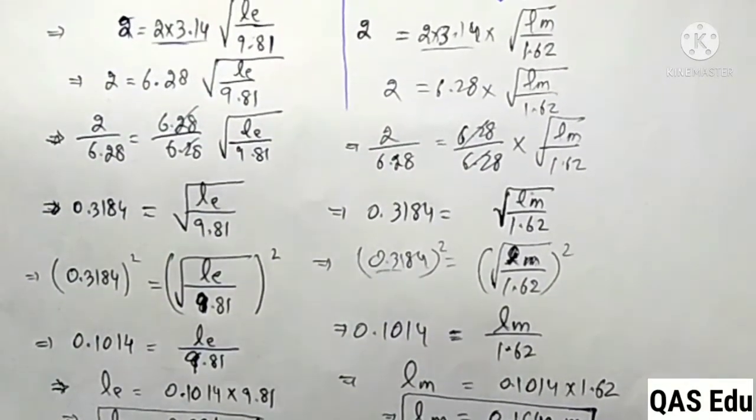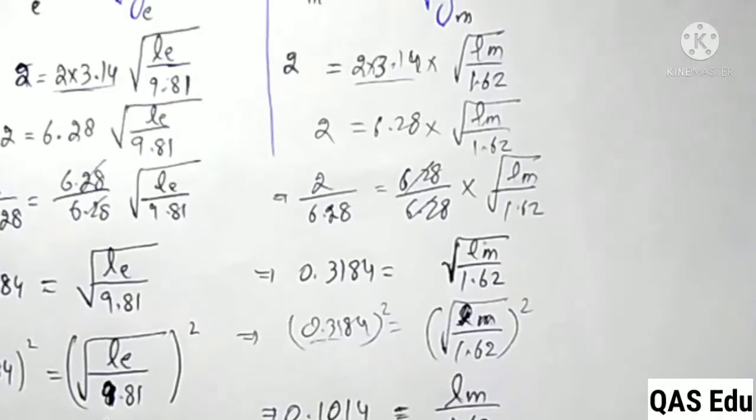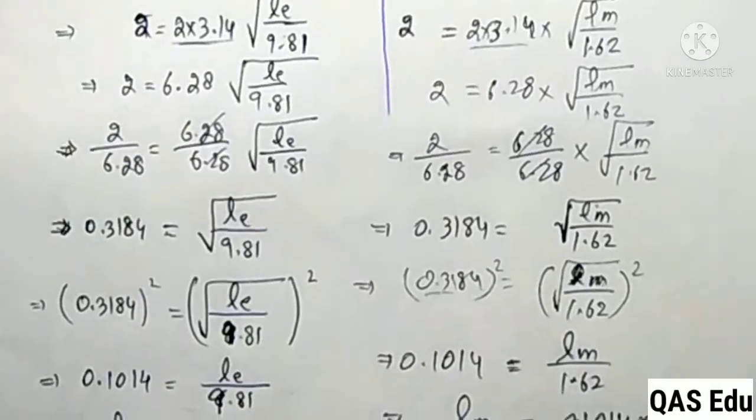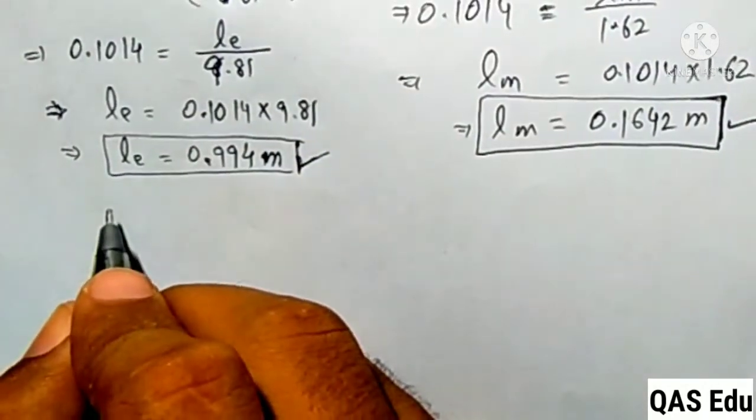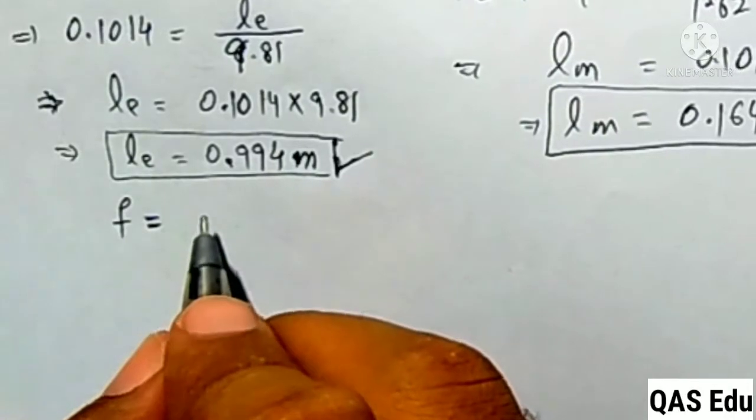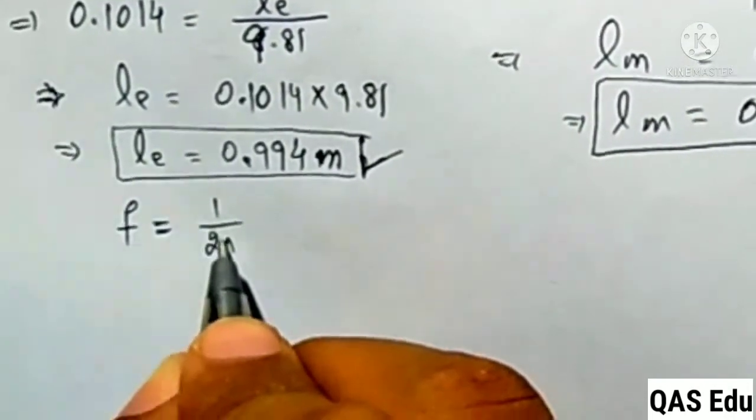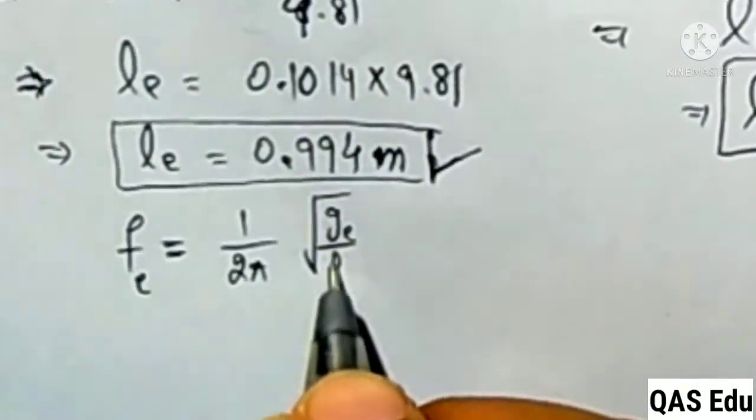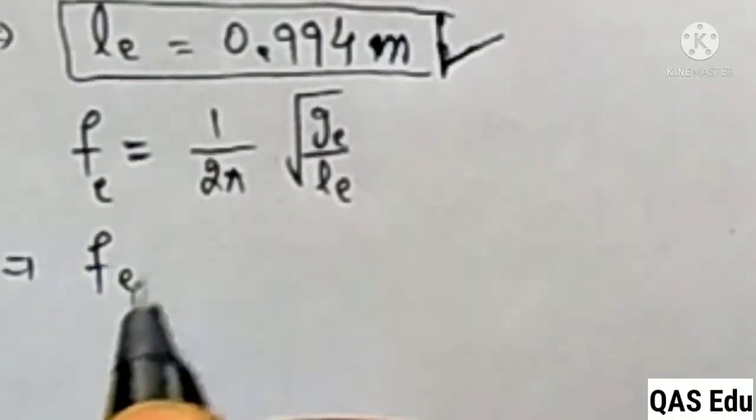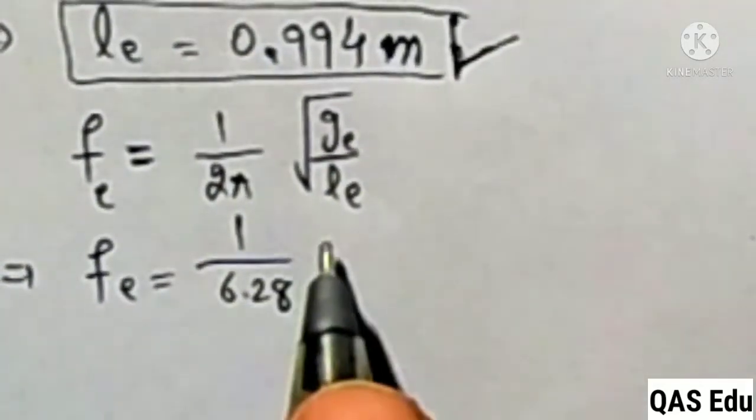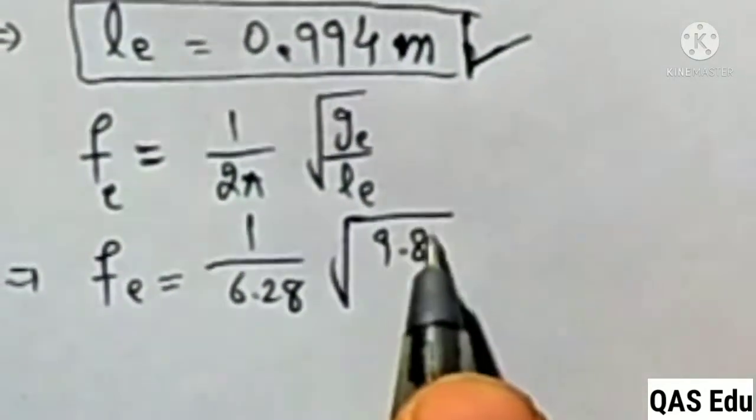For frequency on Earth and Moon: The frequency formula is f = 1/(2π)√(g/L). For frequency on Earth: fe = 1/(2π)√(ge/Le) = 1/6.28 × √(9.81/0.994).